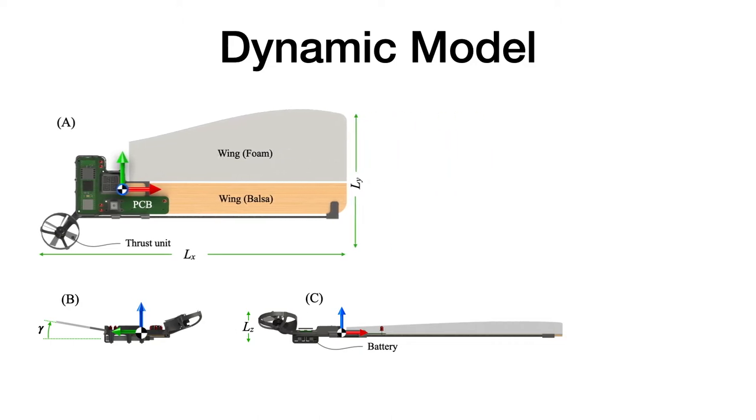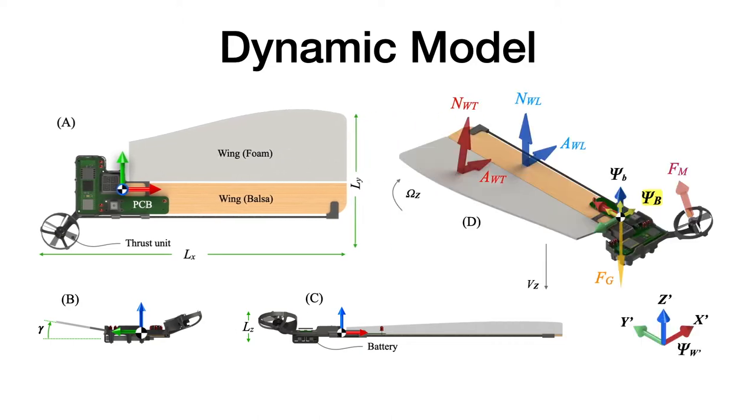So all the forces acting on the platform are gravitational force, aerodynamic force from the wing leading edge and the trailing edge, and the thrust from the motor.